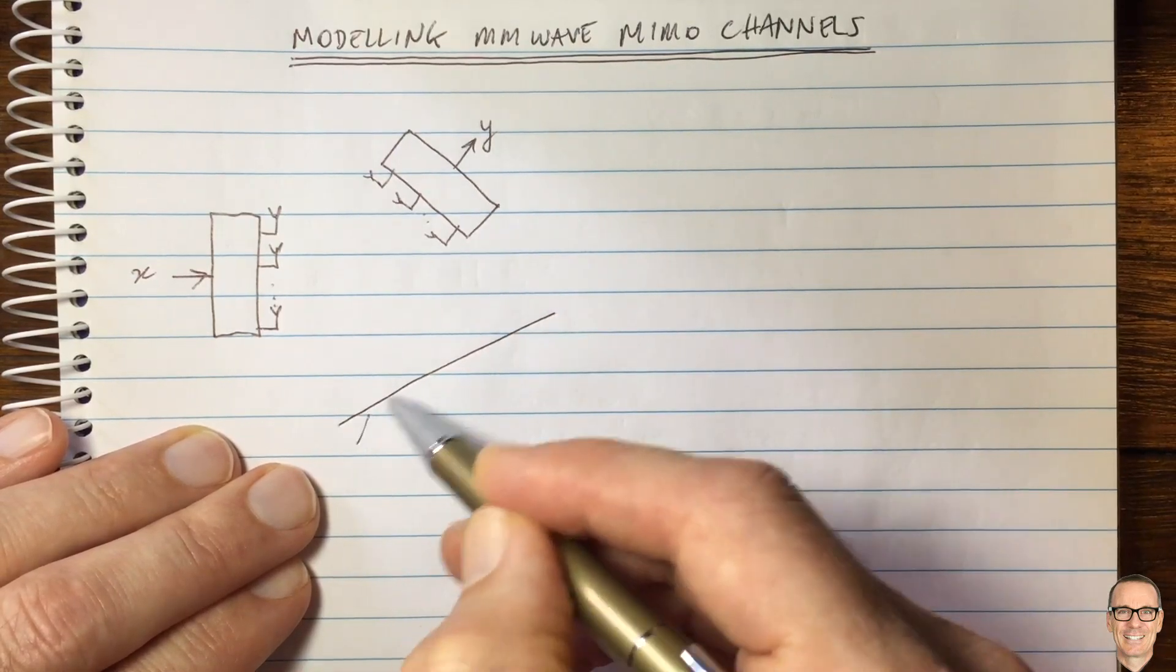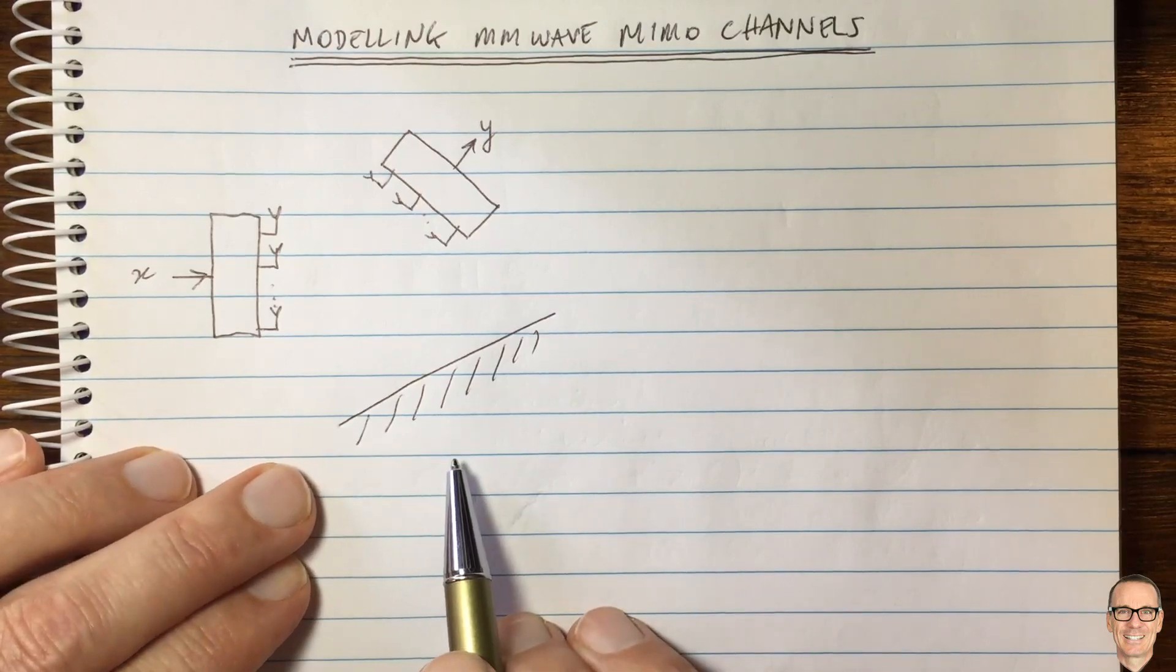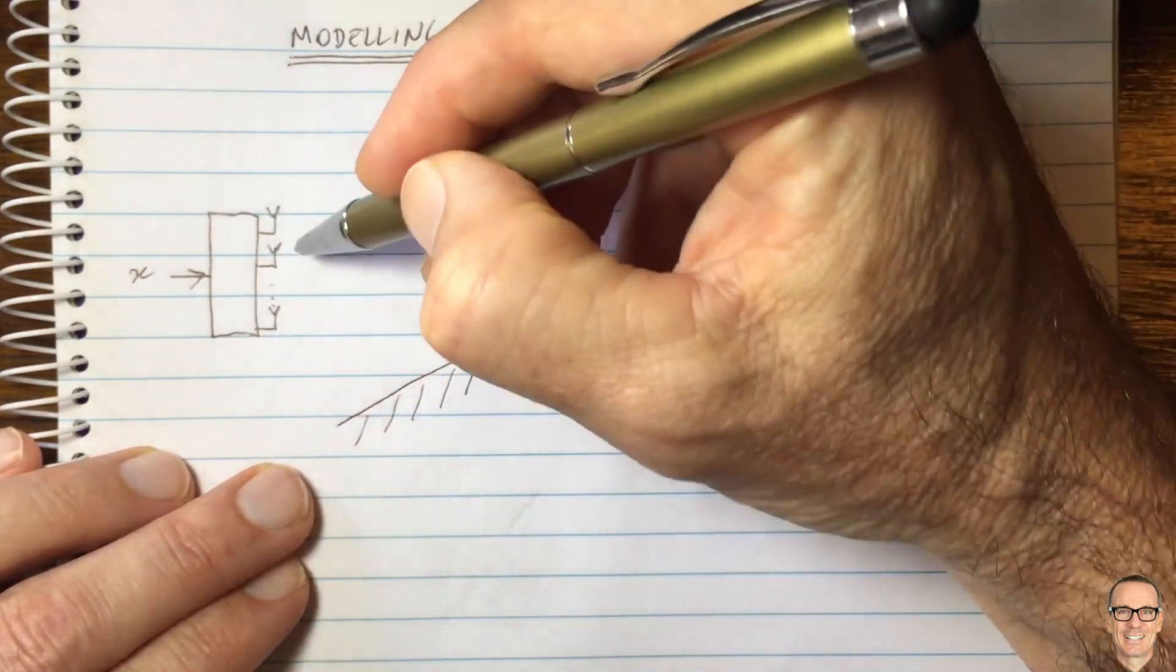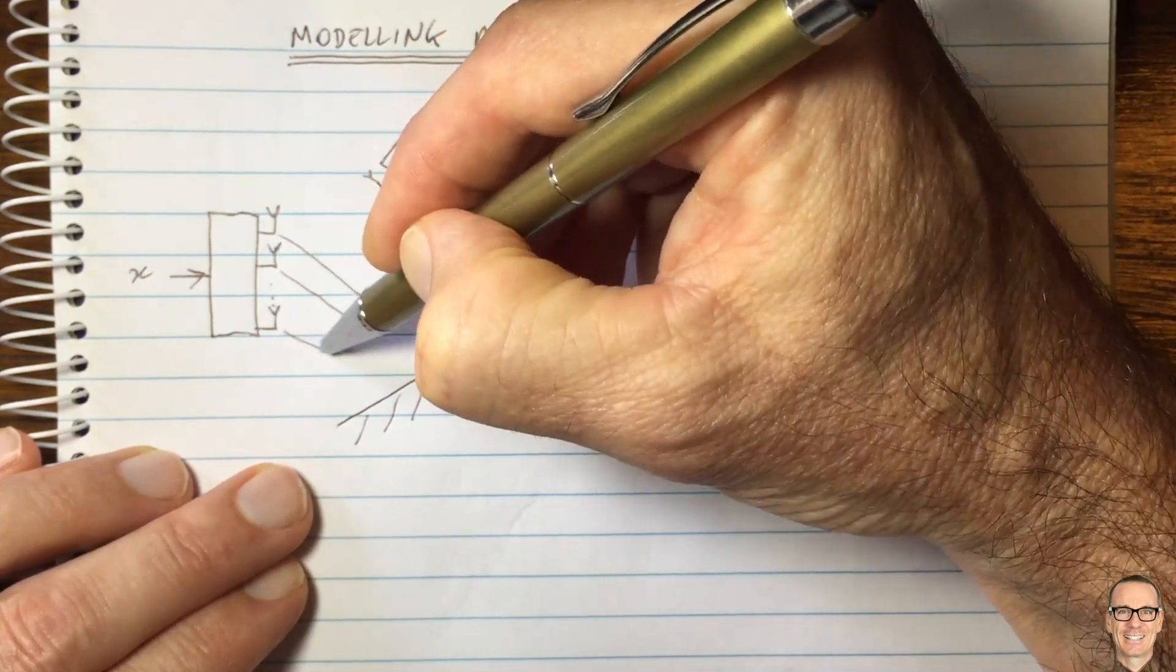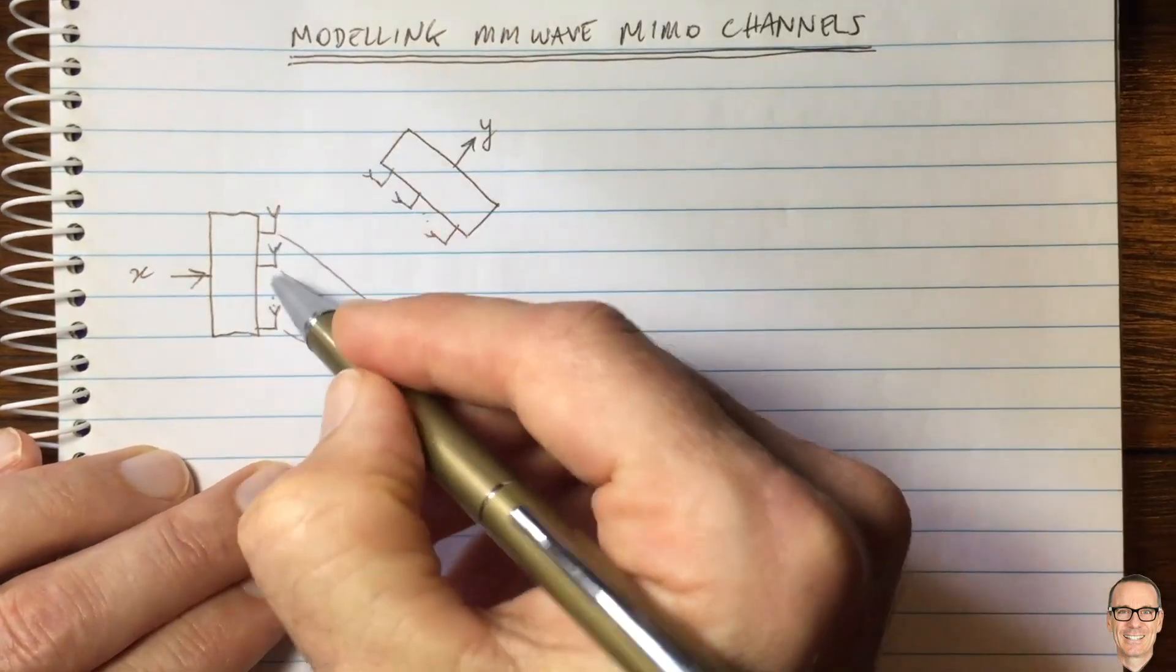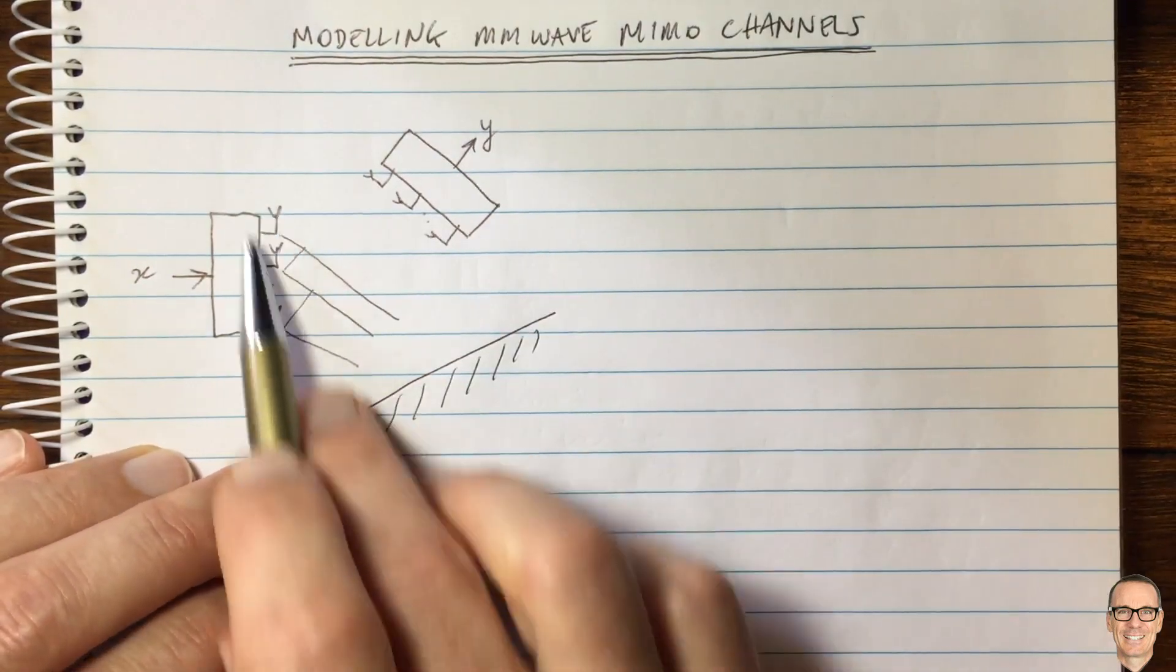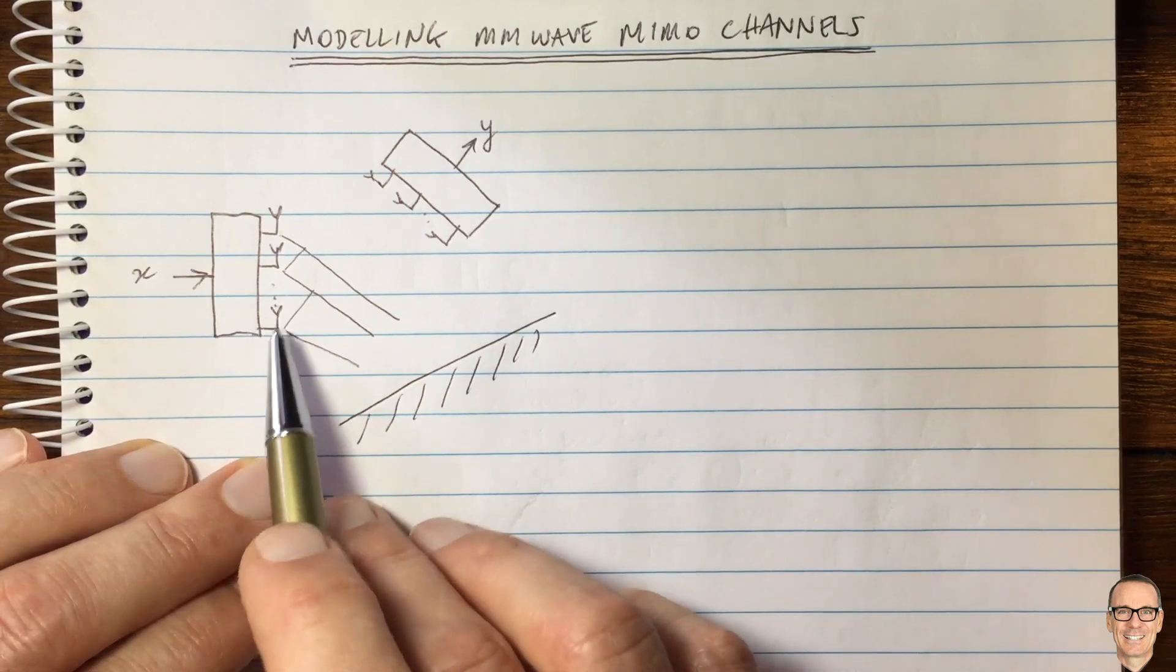And let's assume there's a wall over here and there's a path that is bouncing off this wall. So here we've got multiple antennas. And so this signal towards this wall is going to be going in this direction in a parallel way from each of these antennas. And what that means is there's a delay between each of these antennas. And if they're uniformly spaced, then the delay between each pair is the same.